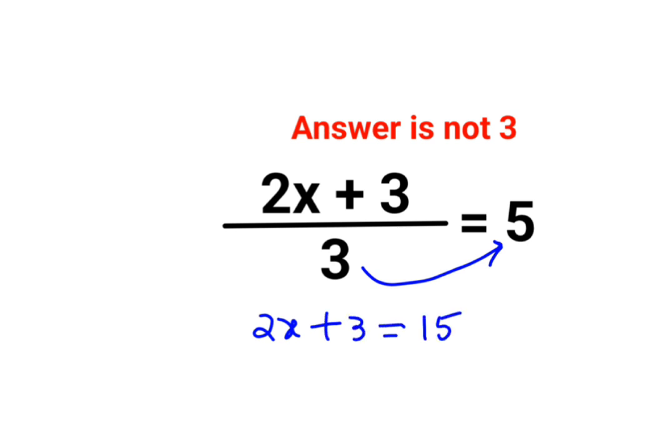Now the next step should be shift this 3. The second step is basically shifting the 3 on the other side. So you are subtracting 3 on both sides and you are getting 2x equals to 15 minus 3, which is 12.